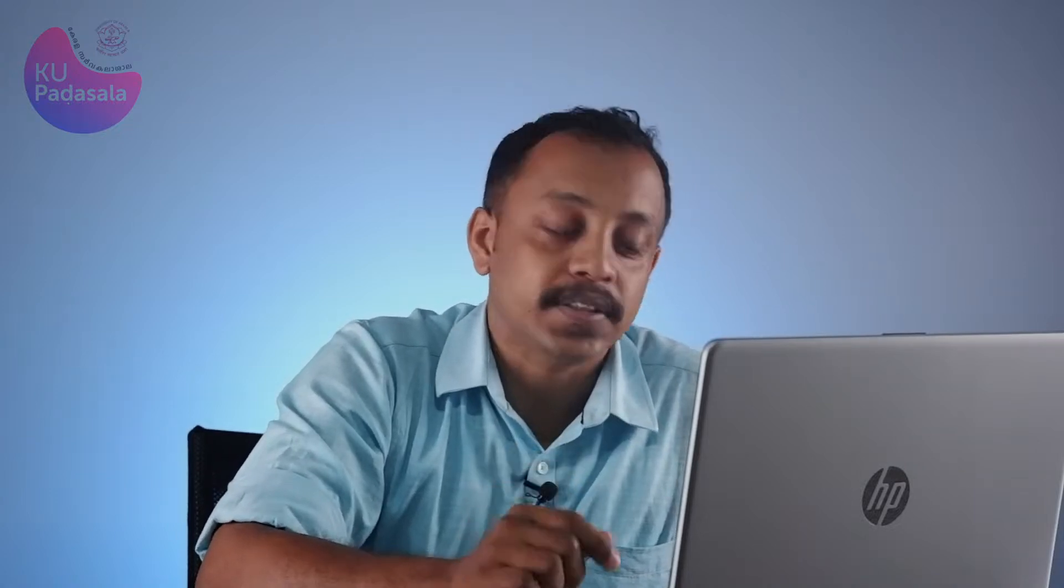Now, let me consider the particular case of time independent potentials. That is, the potential energy function V is independent of time. As you know, for conservative systems, this is always true. In such cases, where the potential function is independent of time, the Hamiltonian operator will also be constant in time and hence, the Schrödinger equation will have solutions that are separable. That is, that consists of a product of two functions, one depending on position only and the other depends on time only.